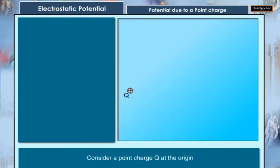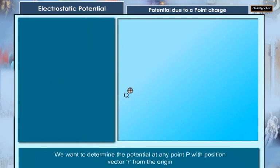Let's consider a point charge Q at the origin. We want to determine the potential at any point P with position vector R from the origin. For that, we must calculate the work done in bringing a unit positive test charge from infinity to the point P.